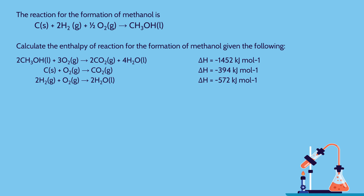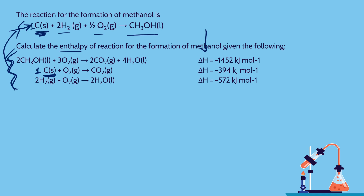Here's another example. This time we're trying to figure out the enthalpy of reaction for the formation of methanol — where we take the elements carbon, hydrogen, and oxygen and make one methanol molecule. We have three given reactions that we know the delta H for. We are going to mix, match, and manipulate those equations to get that one reaction so we can find its delta H. I like to start at the beginning — we're going to see some carbon here. I'll scan my reactions and find a match — there it is. That one carbon is already a match for the one carbon I want, so I'll just rewrite that equation as-is.